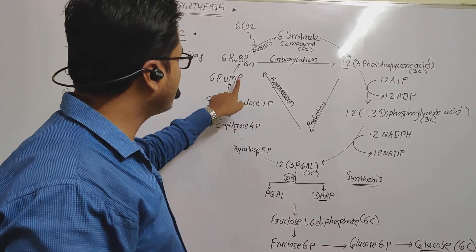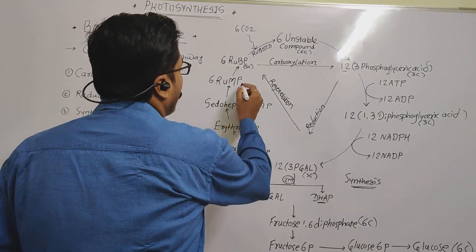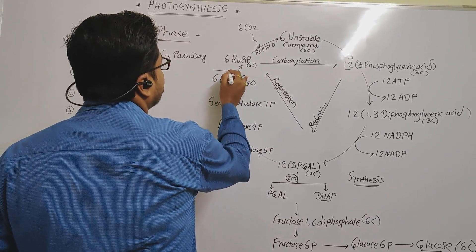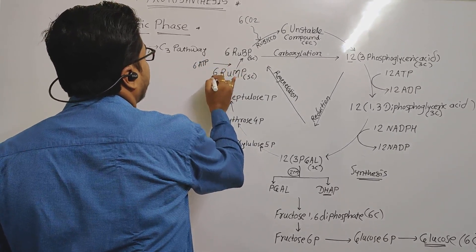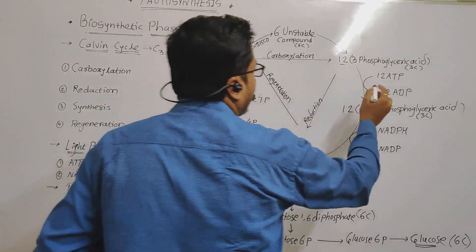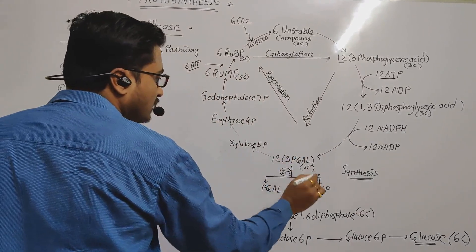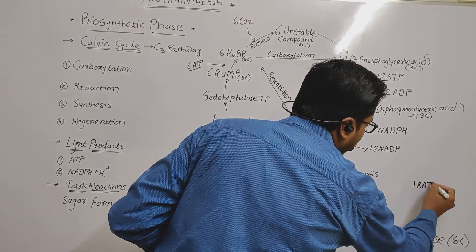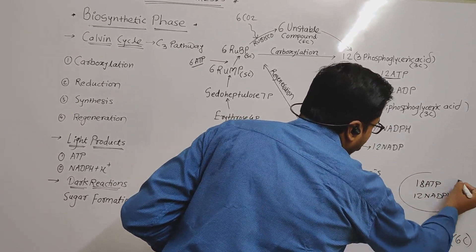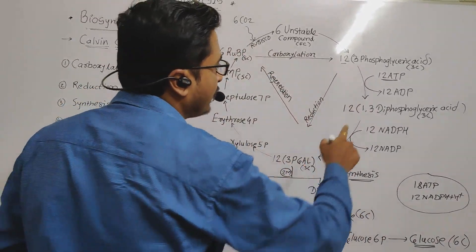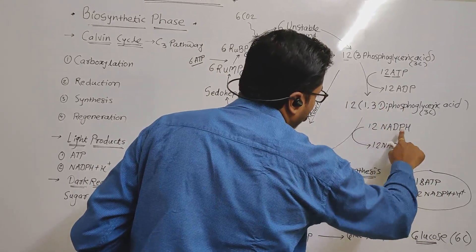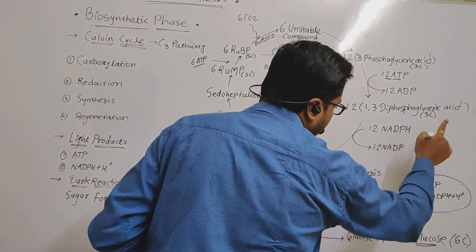The 10 remaining molecules (10 × 3 = 30 carbons) are converted into 6 molecules of RuMP through regeneration — conserving all 30 carbons since 1 RuMP has 5 carbons (6 × 5 = 30). Then 6 RuMP molecules react with 6 ATP and are converted into 6 molecules of ribulose bisphosphate (RuBP). So 6 ATP are utilized in regeneration and 12 ATP in reduction — giving 18 ATP total.